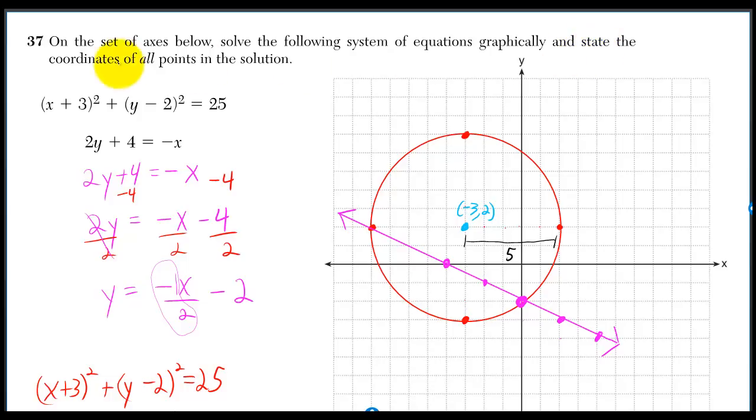Now we need the coordinates of all points in the solution. Well the solution is just where they intersect. We've got 0, negative 2 and negative 8, 2.